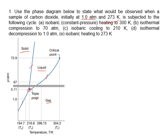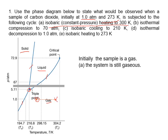If the sample is initially at one atmosphere and 273 kelvin, that point is in the gas phase region, so initially the sample is a gas. Under isobaric constant pressure heating, temperature goes up to 300 kelvin, and this point is still in the gas phase region — the system is still a gas.